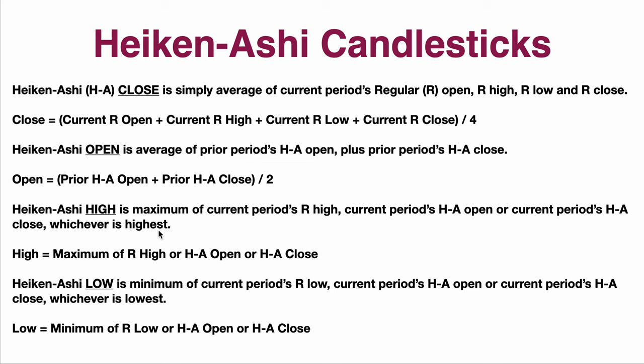The high is the maximum of the regular high for the day, which is usually what it is. It could also be the Heiken Ashi open or the Heiken Ashi close if they're higher than the high of the day — so again averaging out that price movement for you. The low is the lowest of either the low for the day, or the Heiken Ashi open, or the Heiken Ashi close.